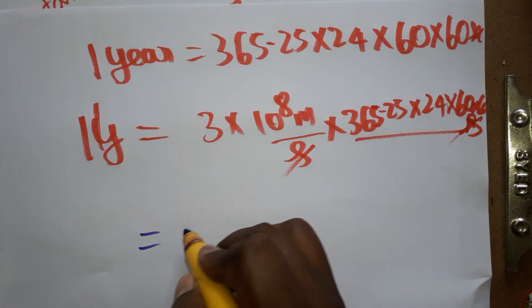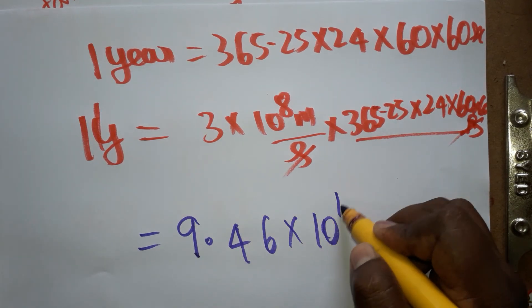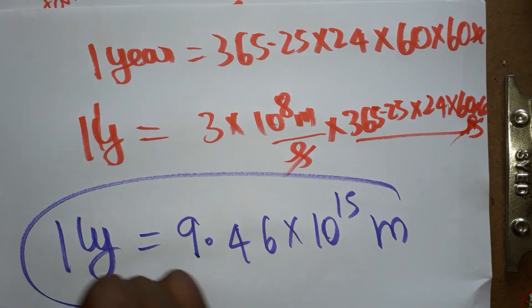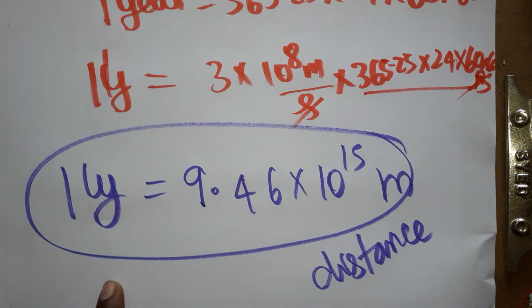The result is 9.46×10^15 meters. So one light year equals this many meters. Light year represents distance.